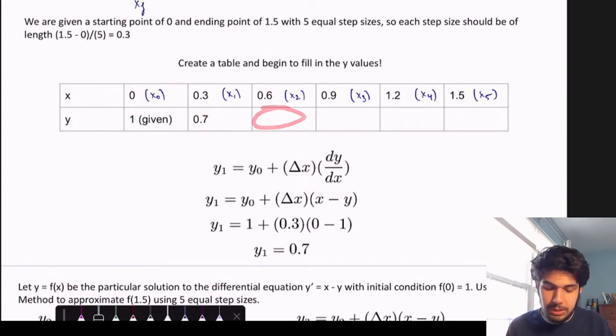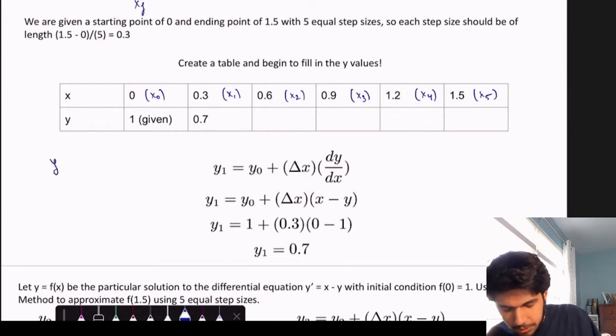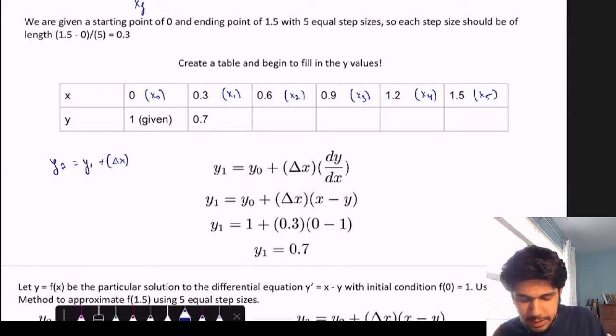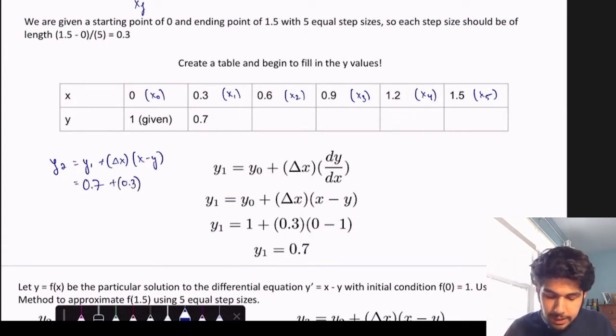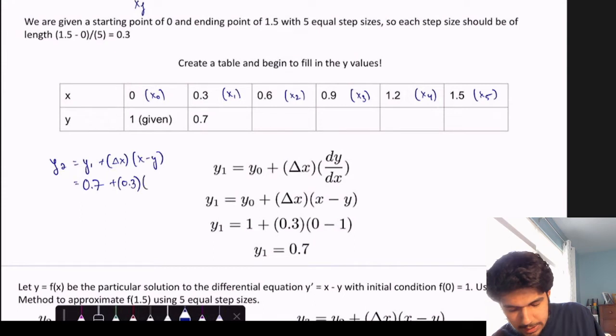So now we would want to compute this value. So let's start to hypothesize what that would look like. So using the formula y sub 2 equals y sub 1 plus delta x times dy dx, which is x minus y. So y sub 1 is 0.7, delta x is still 0.3, and then x minus y would be 0.3 minus 0.7, coming from these values here.